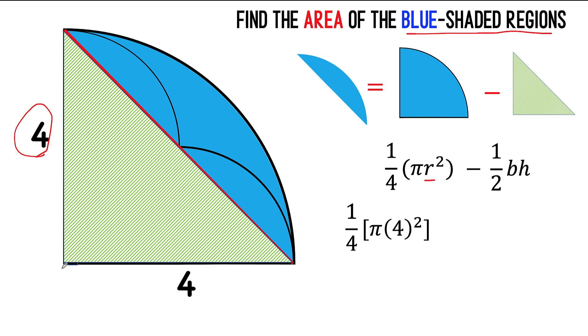What is the base of this green triangle? It's four units, the height is also four units, so we have one-half, four times four. Then four squared is 16, divided by four is four, times pi, we have four pi.